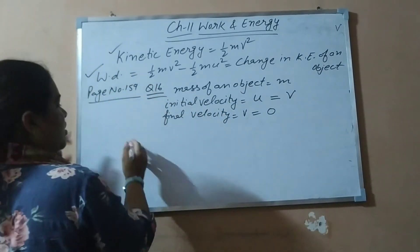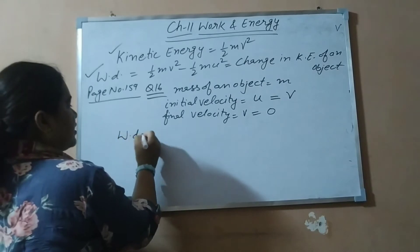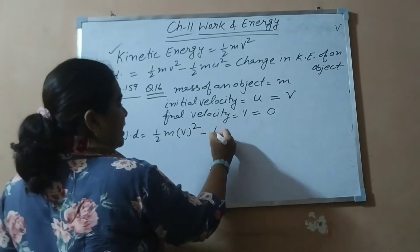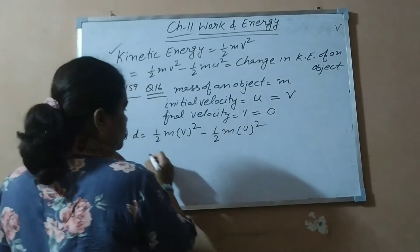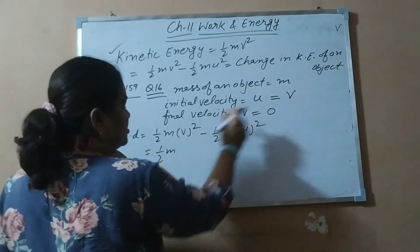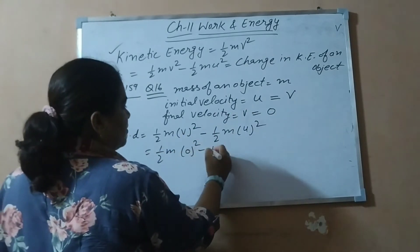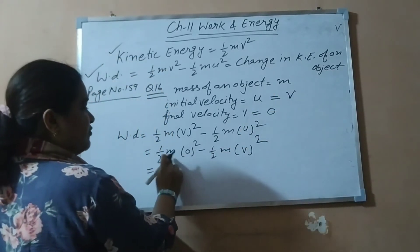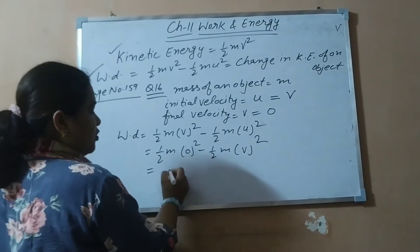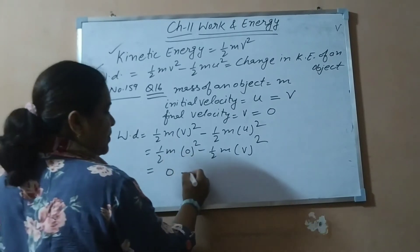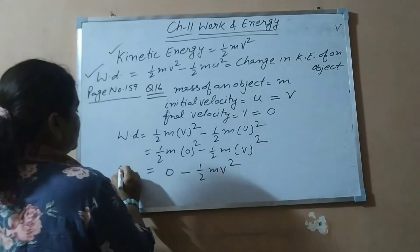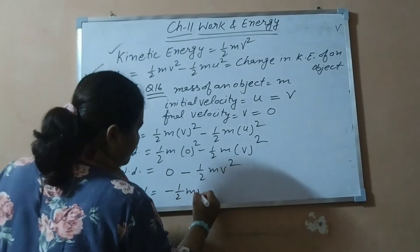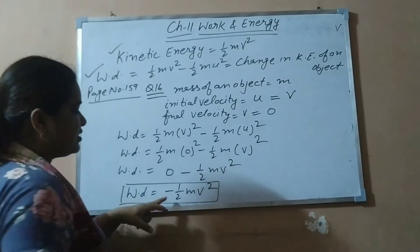Which formula will we use? The amount of work done is calculated by: half M times final velocity squared minus half M times initial velocity squared. Now put the final velocity value as 0, so it becomes 0 squared minus half M V squared. Since 0 is multiplied, it becomes 0 minus half M V squared. So the amount of work done we have calculated is minus half M V squared, because general values are given — not specific numbers like 5 or 100 meters per second.